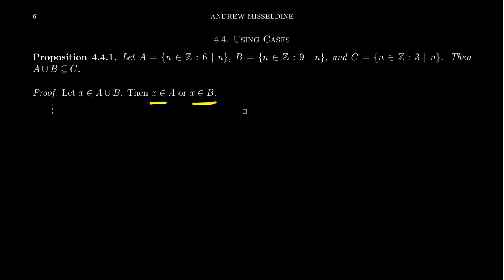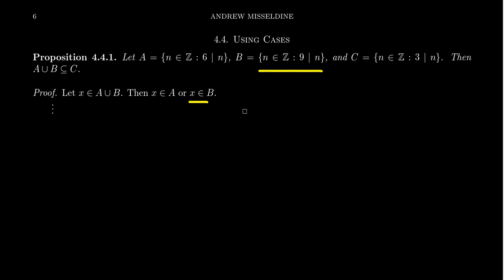One of those two things must happen, so we consider the two possibilities separately. This gives us a huge advantage: when you assume that X belongs to A, you inherit the properties of being inside A. And later, when you assume that X is inside B, you inherit the property of being in B. So by putting it into cases, you're gaining assumptions you didn't have beforehand. You'll have to prove that X belongs to C in each case separately, using different arguments.